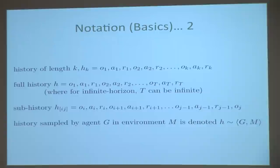One more notational thing. I'm often going to talk about a history of interaction — the agent has been acting for some time and has some history, which in a learning setting is the data it has seen. H_k is the history from the beginning of time to time step k: first observation, first action, first reward, second observation, second action, second reward — that's the history at time k.